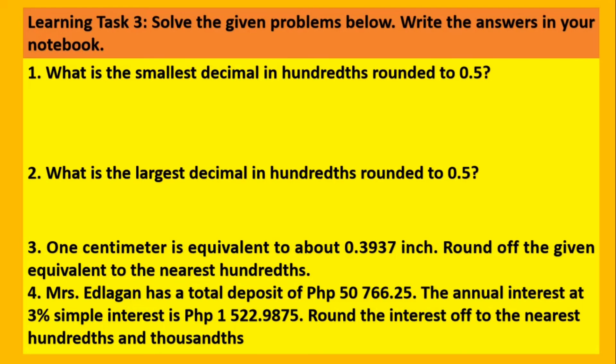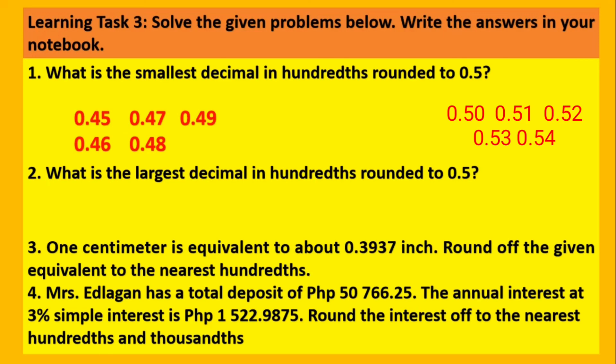For learning task 3, solve the given problems below. Write the answers in your notebook. Number 1: what is the smallest decimal in hundreds rounded to 5 tenths or 0.5? First, alamin muna natin ano ba yung mga decimal numbers na kapag na-round off mo ay 0.5 ang lalabas. These are the decimal numbers that if you're gonna round off to the nearest tenths, ay 5 tenths yung lalabas or 0.5. So, ang smallest decimal would be 45 hundredths.